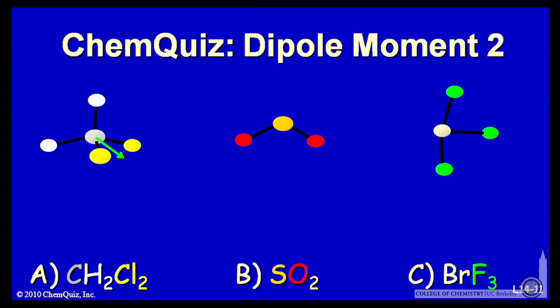SO2 is a bent molecule. It's not a linear molecule like CO2. So the bent configuration leads to a dipole moment for SO2.